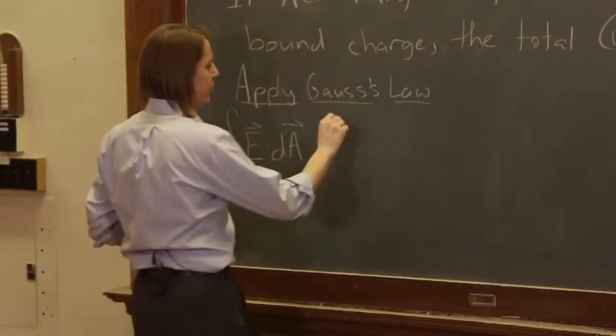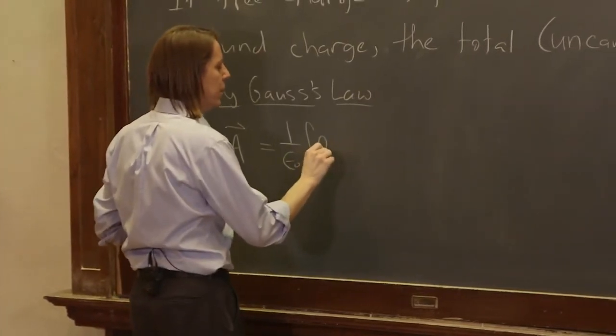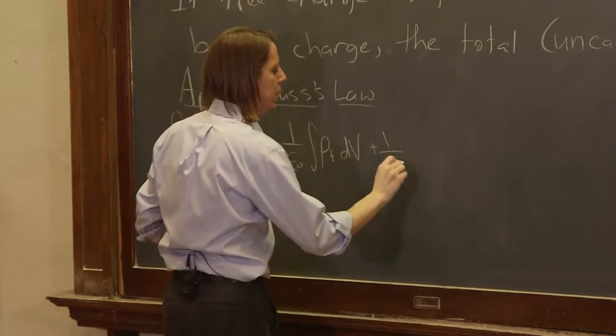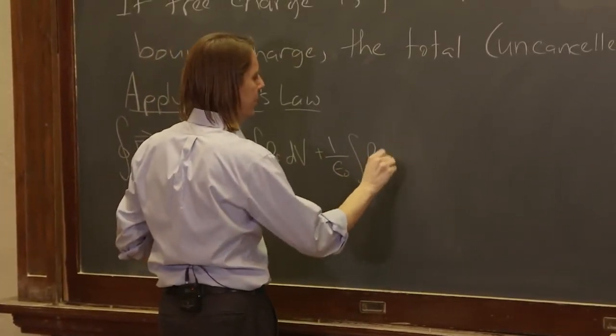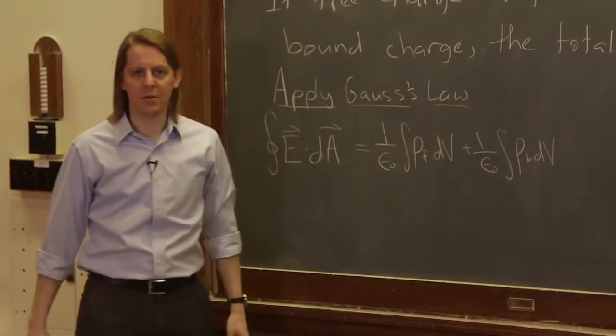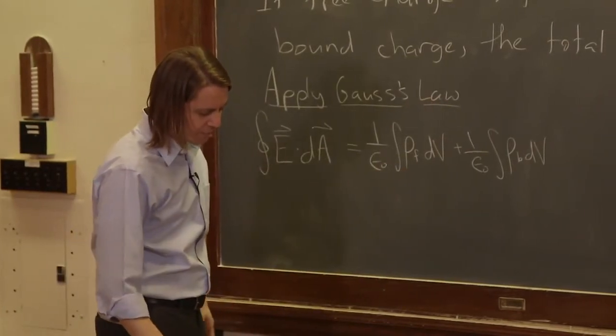And when those are written as charge densities, you just have to write them as integrals. One over epsilon naught, the integral over the volume of rho free dV plus one over epsilon naught, the integral of rho bound dV. That's really just Q enclosed over epsilon naught, just the two flavors of Q enclosed, the bound and the free.